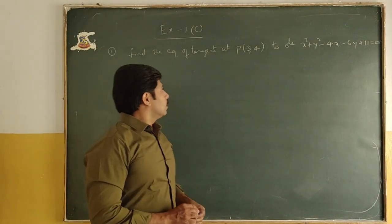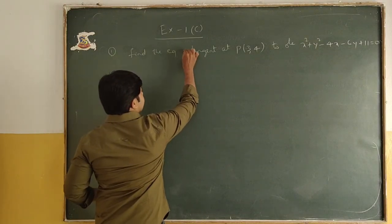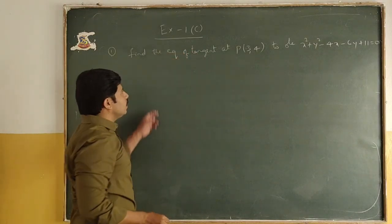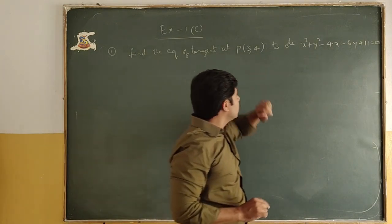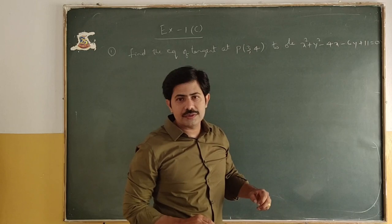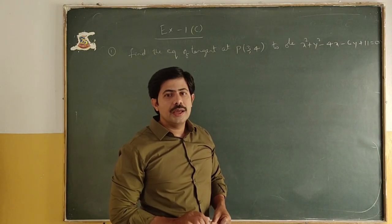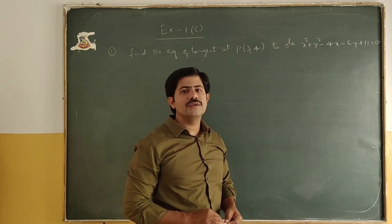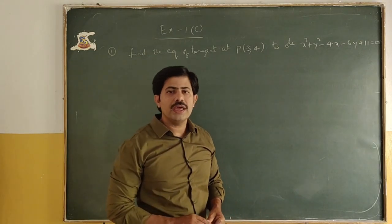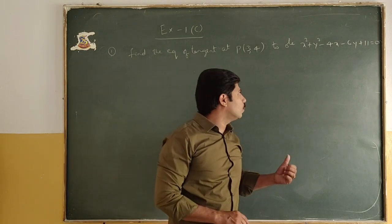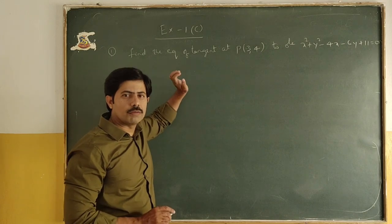Next problem — try this: find the equation of tangent at (3, 4) to the circle x² + y² - 4x - 6y + 11 = 0. To this circle, find out the equation of tangent. Try this problem.